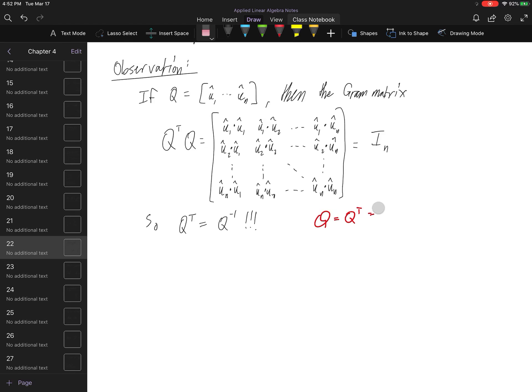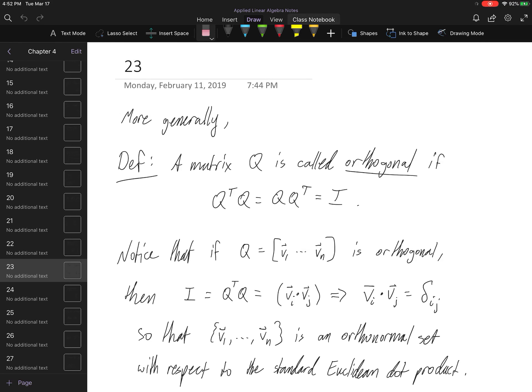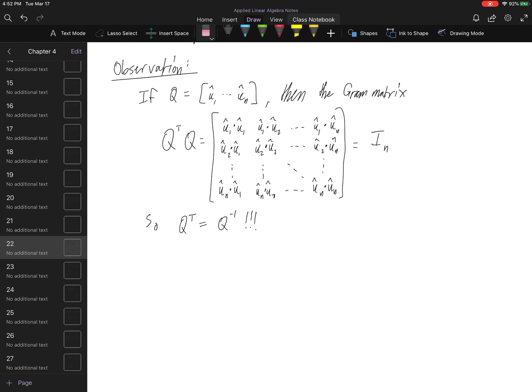So what does that mean about Q transpose? Well, Q transpose would then behave exactly as the inverse matrix for Q. And this is exactly what we're doing here. We're saying, oh, well, make sure I didn't erase anything. There we go. Yep. It means that Q inverse and Q transpose are actually the same matrix.